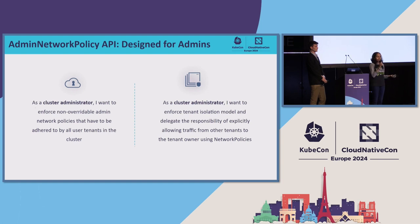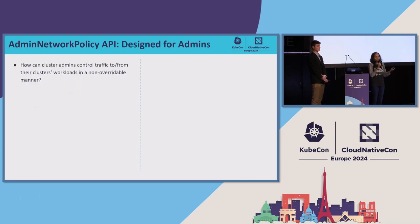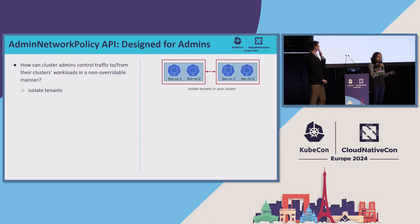Tenant isolation is another key use case. A tenant here could be one namespace or multiple namespaces, and you don't want to replicate your network policies across all tenants to express the same rules. You can just have a global cluster-scoped policy that does this work for you. The first use case in the original KEP is isolating the foo tenant from the bar tenant so they cannot talk to each other.